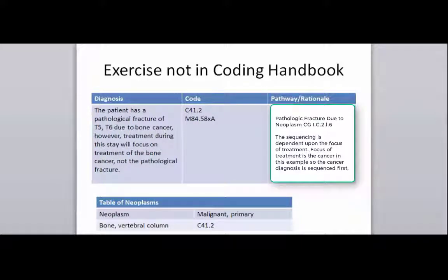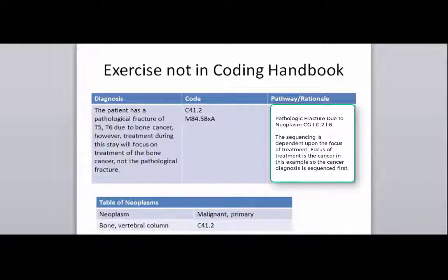Here's the same example, however this time the focus is on the bone cancer, not the fracture. So we simply invert our codes. Now the cancer diagnosis is our primary code and the vertebral fracture — the M84.58 code — is the secondary code in this case.